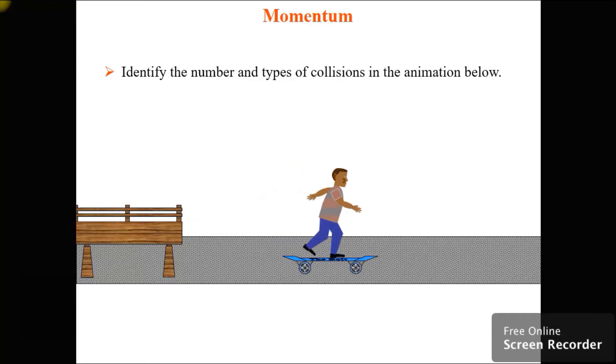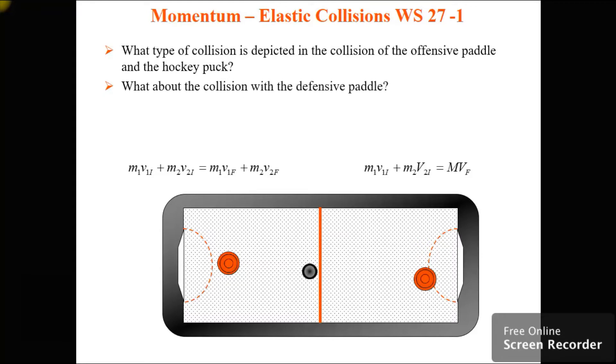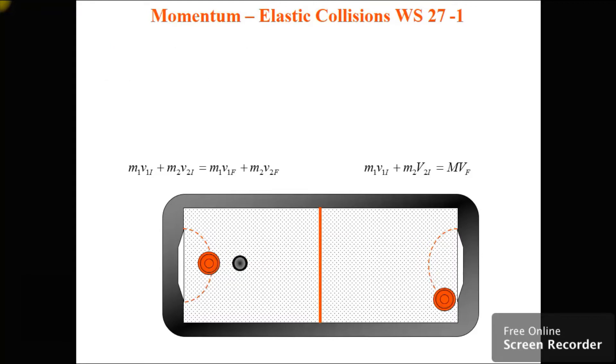Here's our skateboarder. So that collision is inelastic. When the skateboarder, when the guy hits the skateboard, they stick together and move off. So what are the collisions here? There's two. There's where the bang and bang.